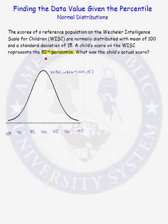Where is the score that corresponds to the 82nd percentile? We can approximate this using the empirical rule, or the 68, 95, 99.7 percent rule. We know that 1 standard deviation above the mean is approximately the 84th percentile. From the empirical rule, 68 percent of the area is within 1 standard deviation of the mean, so 34 percent is between the mean and 1 standard deviation above the mean. The mean is also the median, so 50 percent of the area is below the mean. 50 plus 34 gives us the 84th percentile. So the data value that corresponds to the 82nd percentile will be a little bit less than 115, but we don't know the actual value.